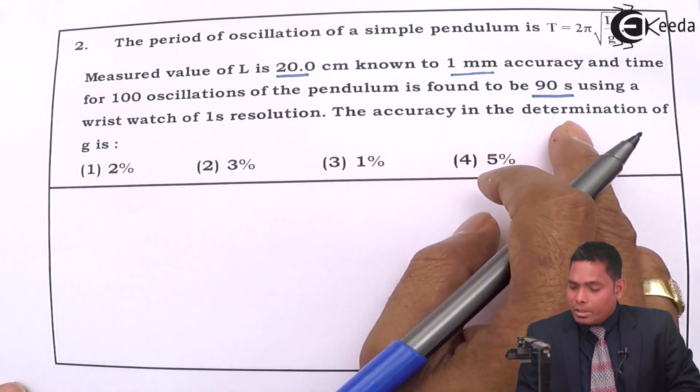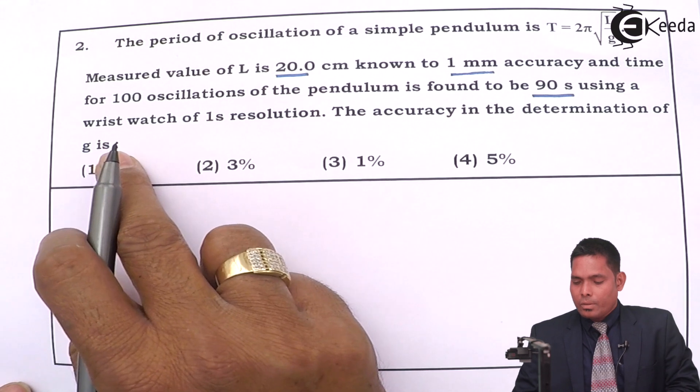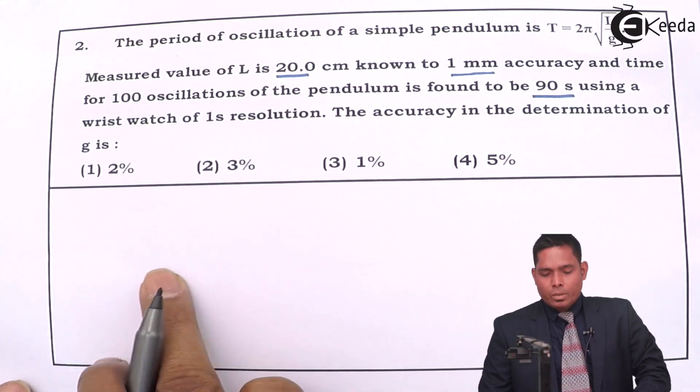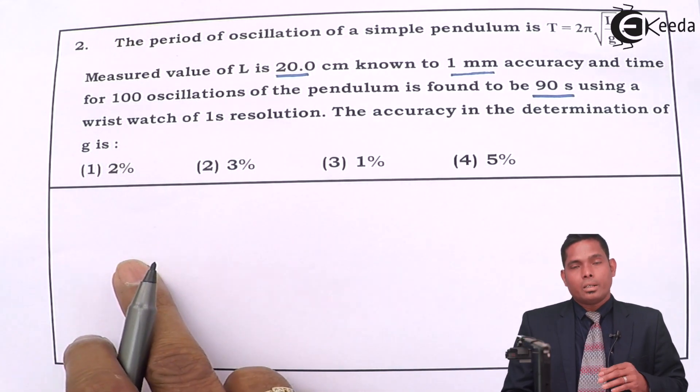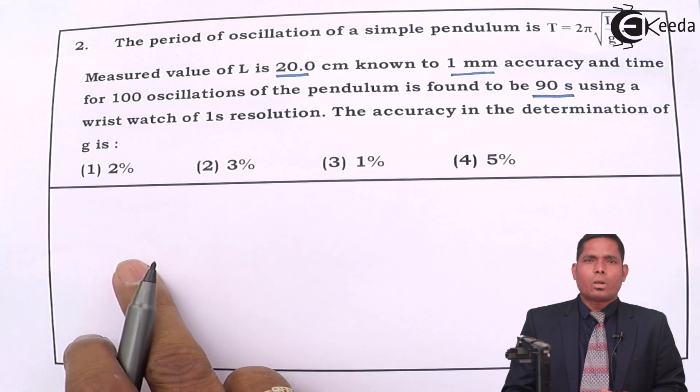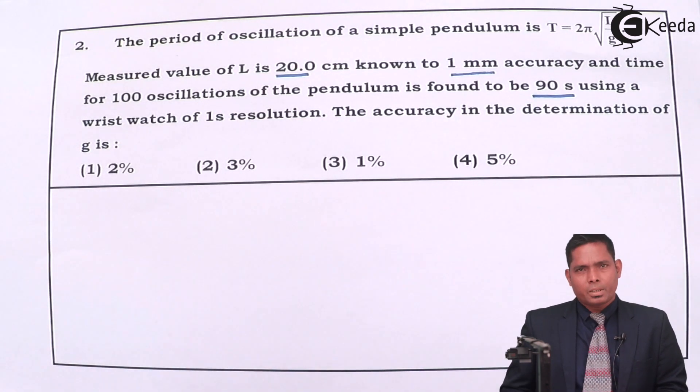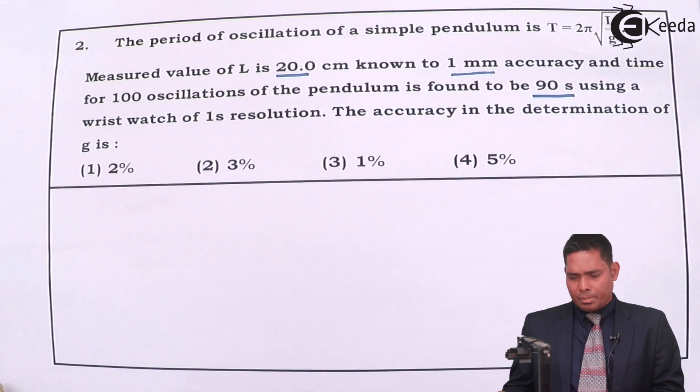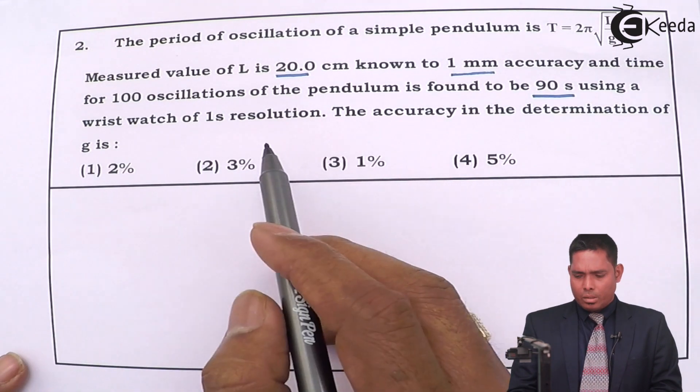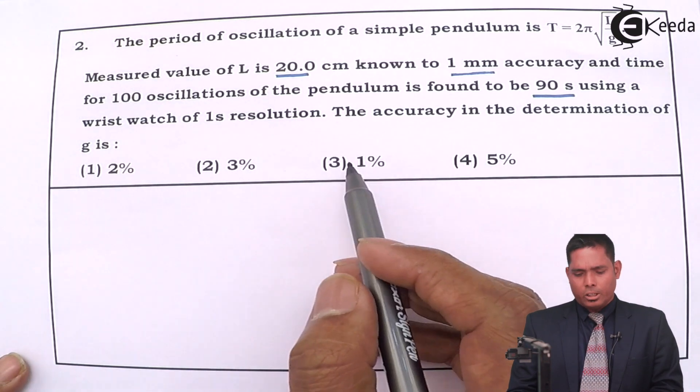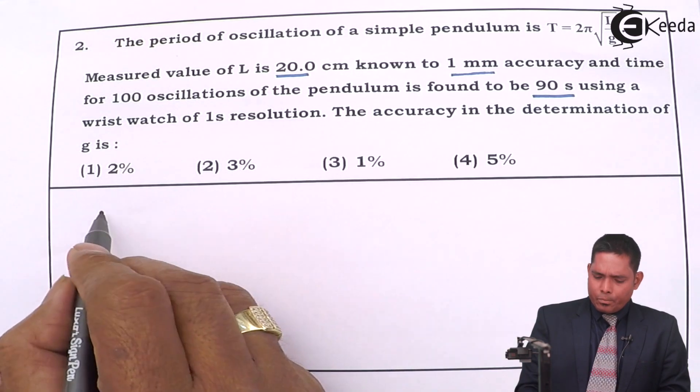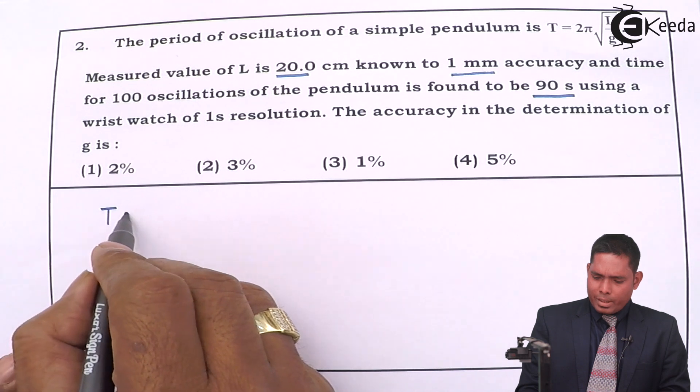Now the accuracy in the determination of g—the accuracy is found in terms of the percentage error. So you have to see what is basically the percentage error in the measurement of this g. First of all you see the formula.